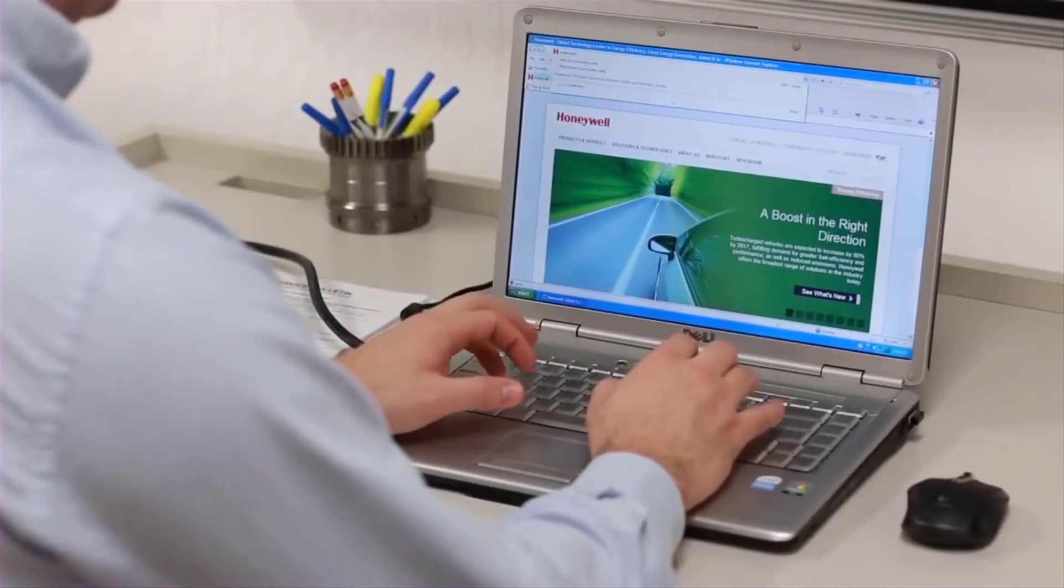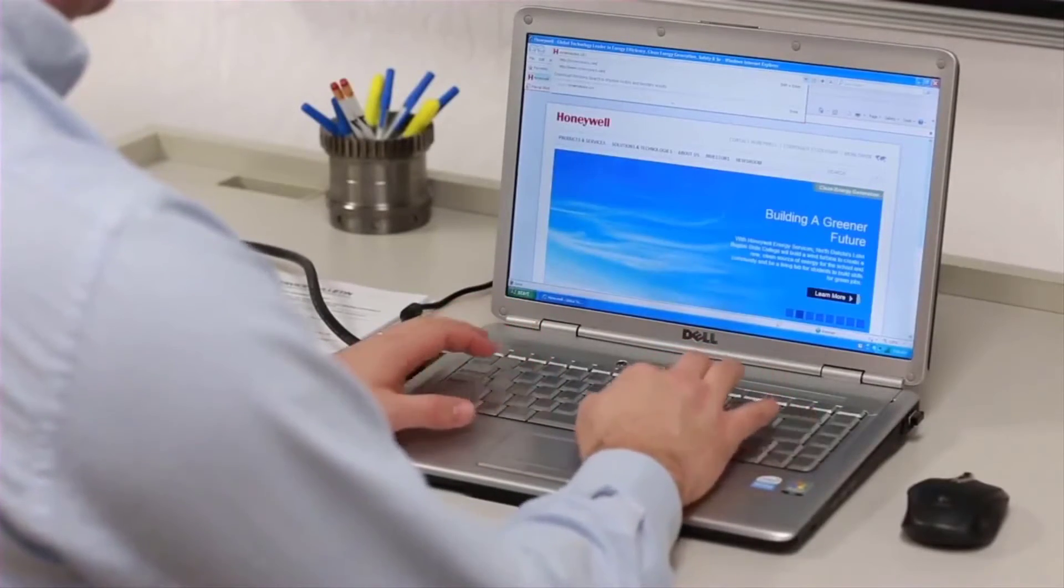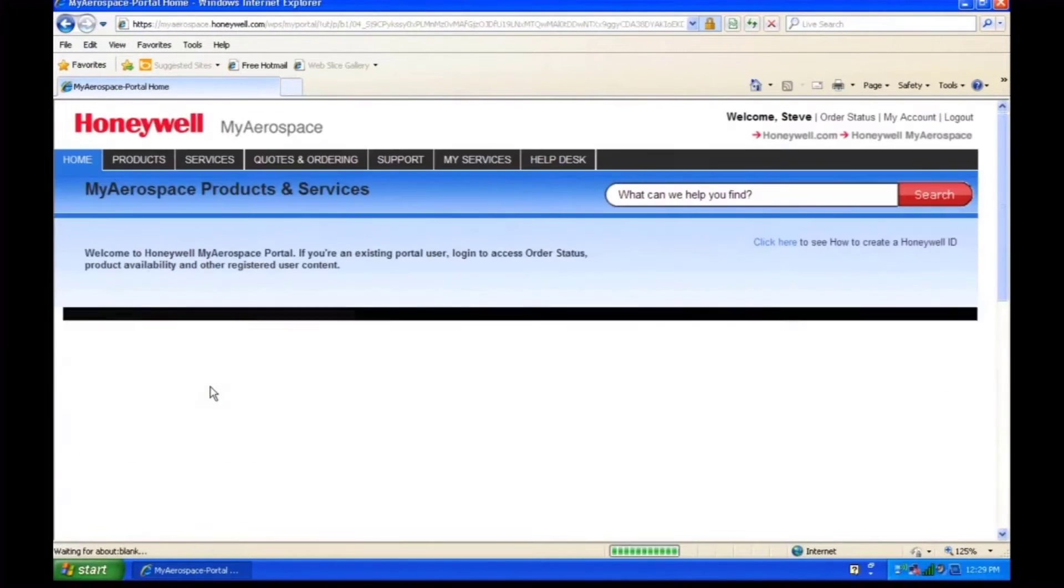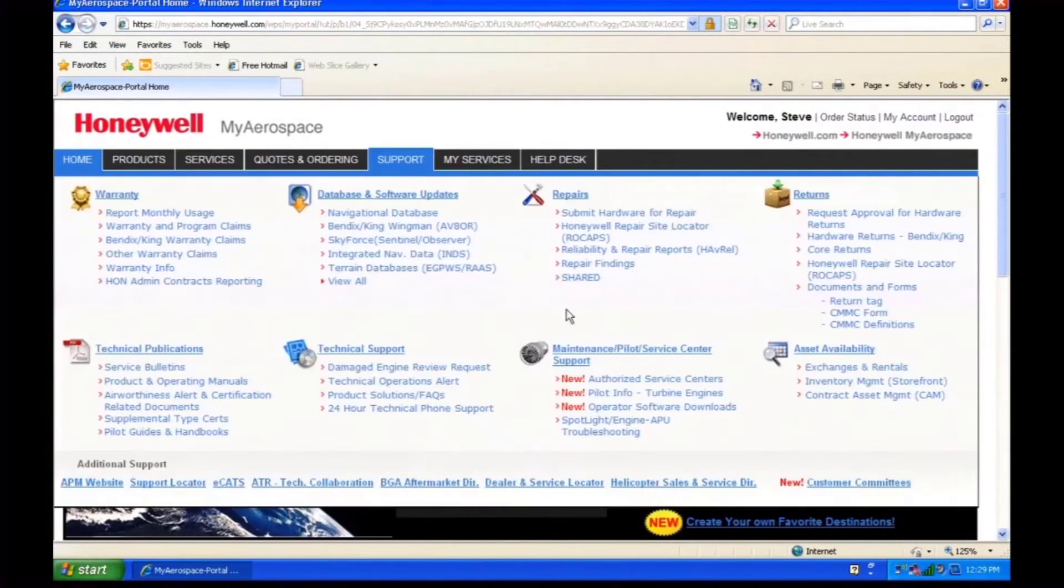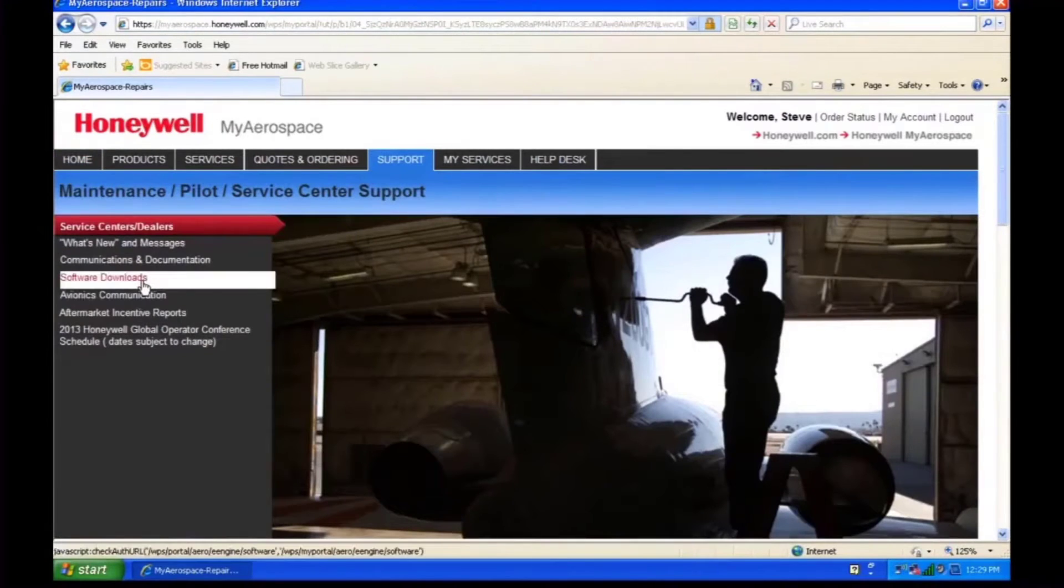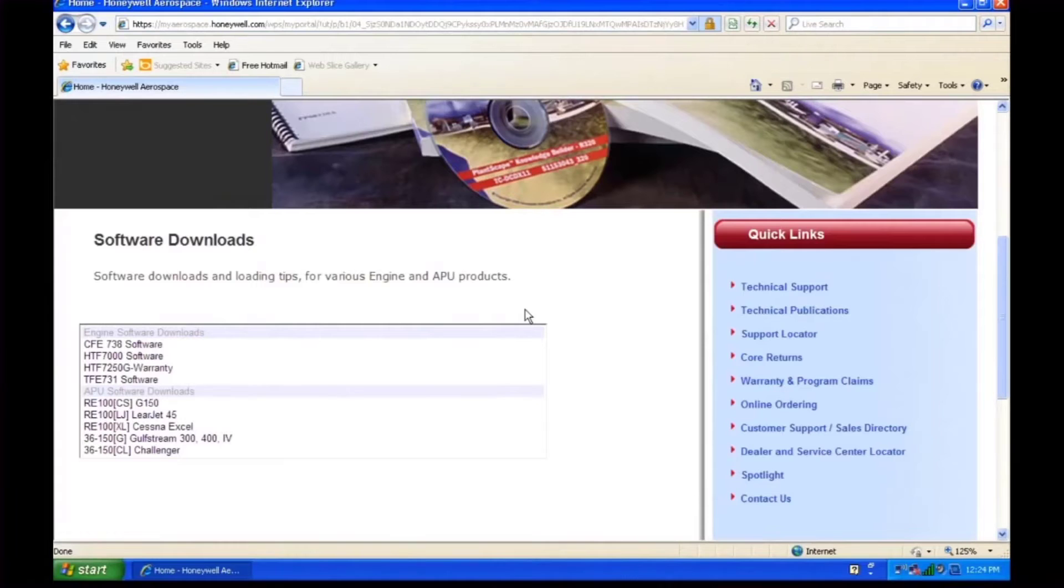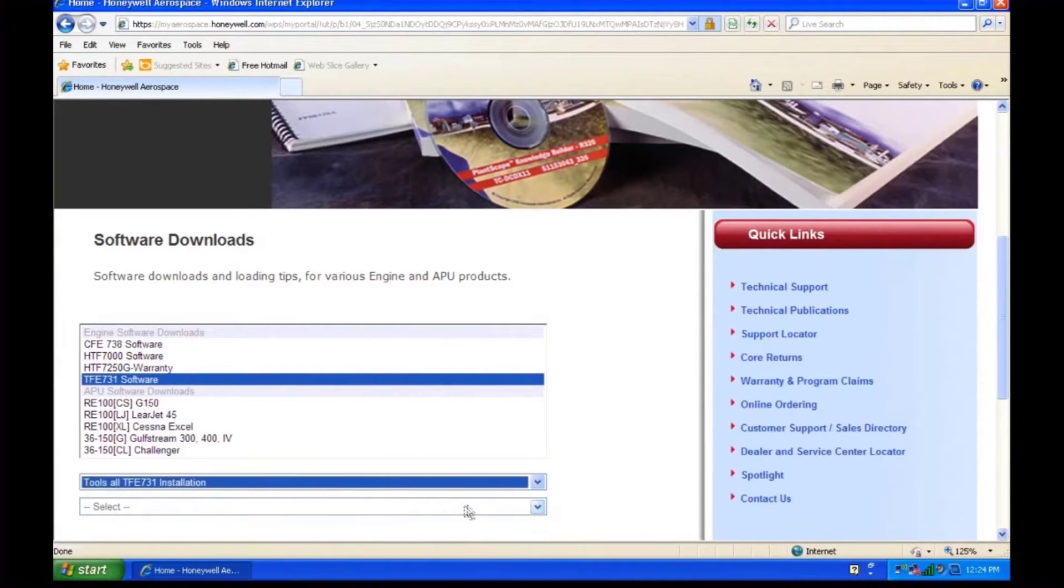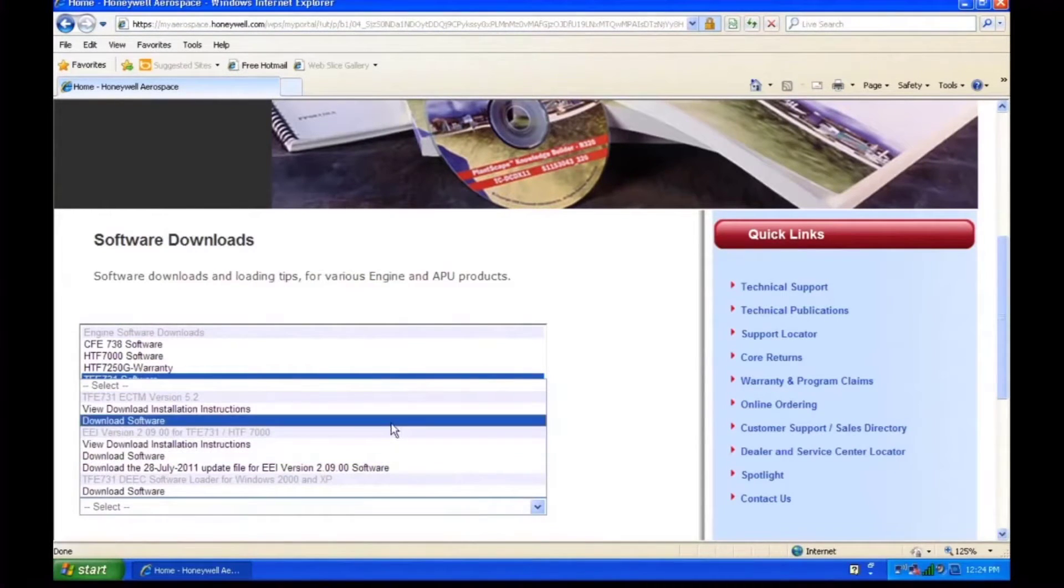First, we'll download the software from MyAerospace.com. Log on and go to Maintenance and Pilot Service Center Support and Software Downloads. You'll find the installation files under TFE731 Software. Look for TFE731 ECTM version 5.2 and download it.